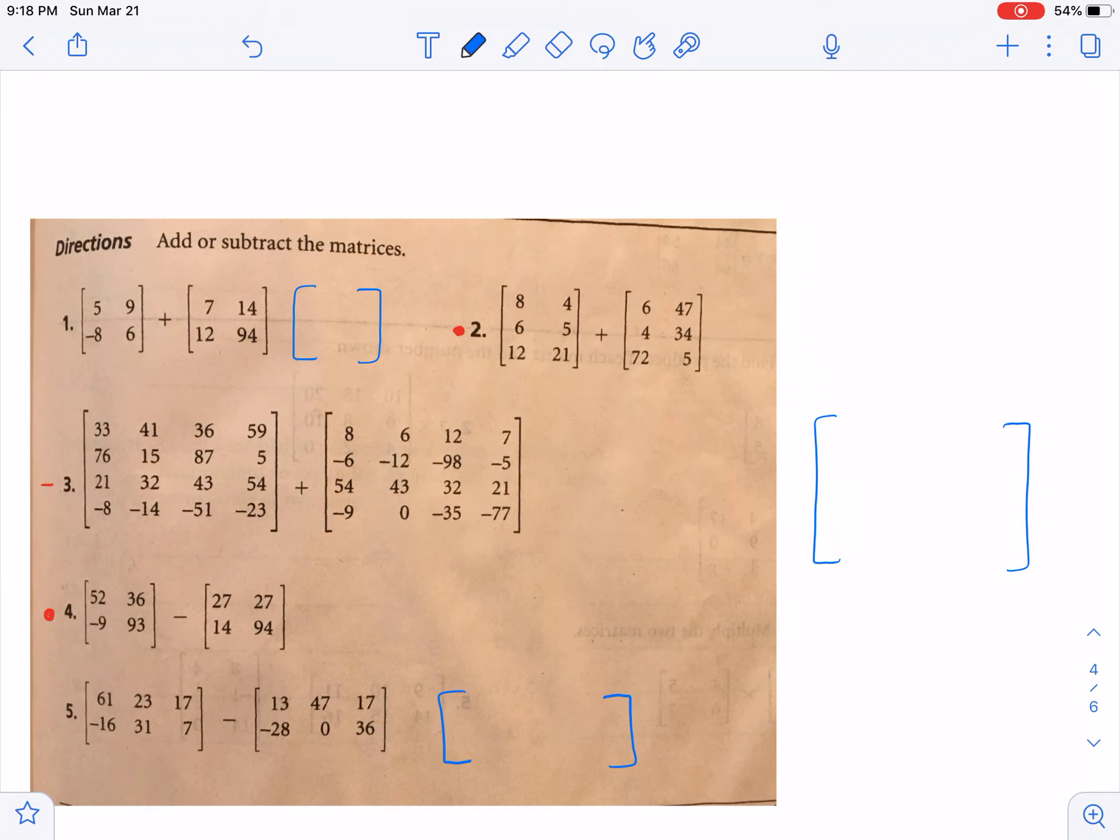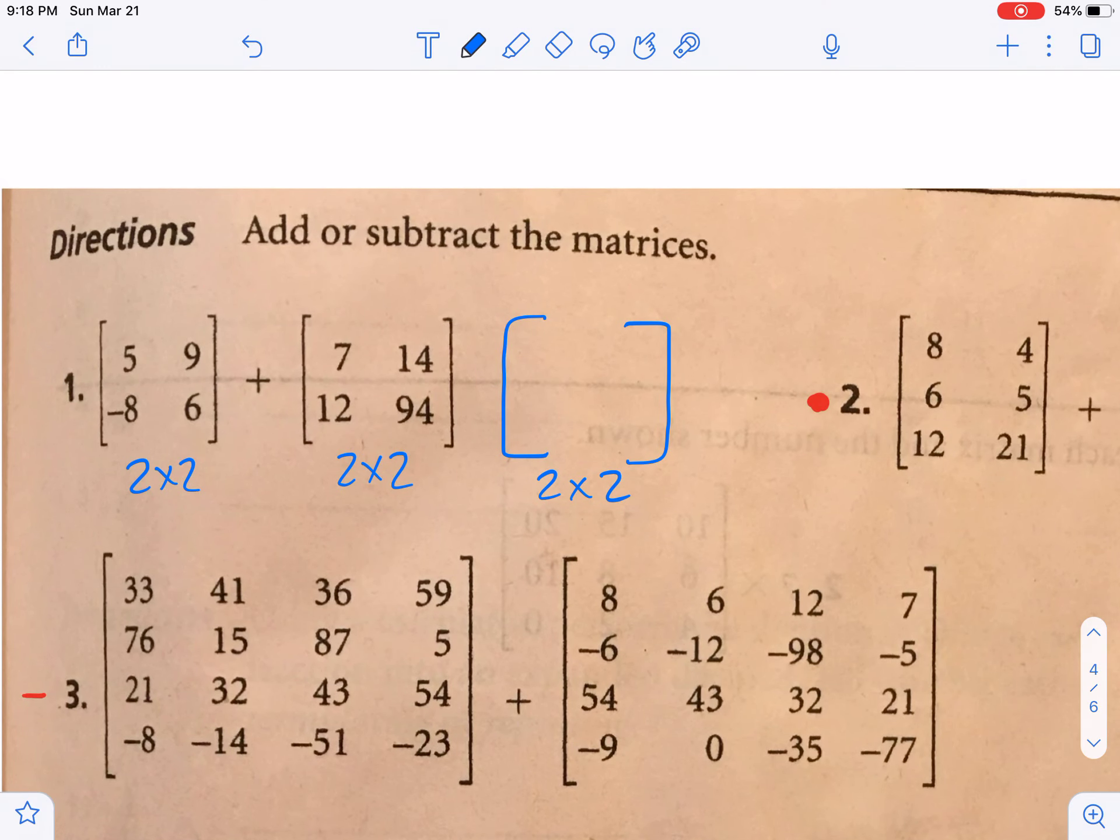So for number one, we have a two by two added to a two by two. And then we're going to get a two by two. And so these are almost all positive. There is one negative thrown in there. So we go five plus seven, because those are in that first row, first column. So five plus seven gives me twelve. Then we'll do nine plus fourteen, which is twenty-three. Then we'll do a negative eight plus twelve, which is four. And last, we'll do six plus ninety-four, which gives us one hundred.